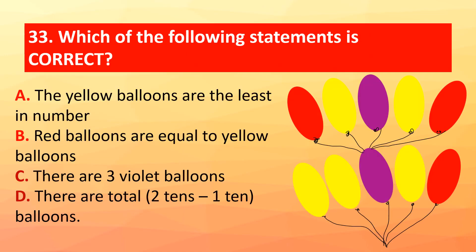Question 33: Which of the following statements is correct? The correct answer is option D: there are a total of 210 minus 110 balloons.